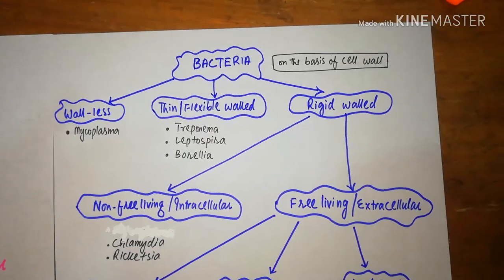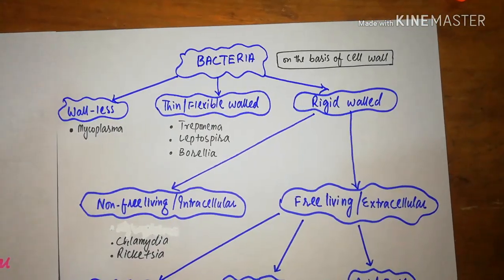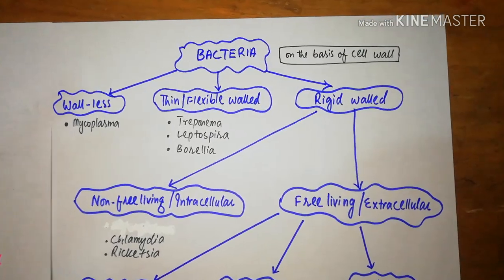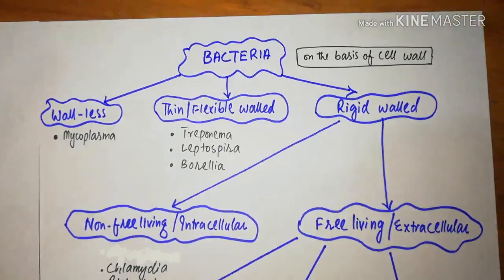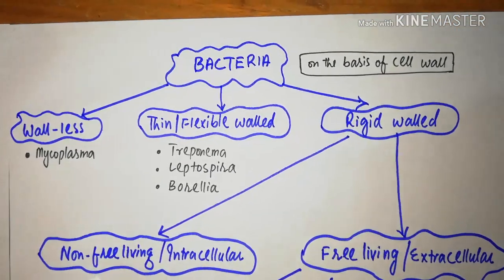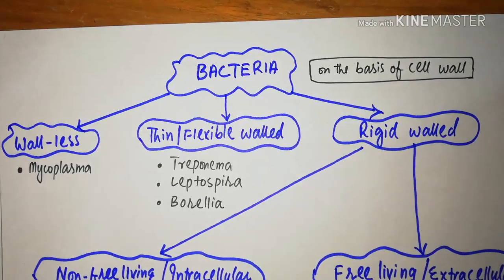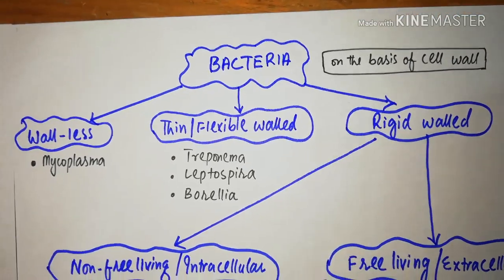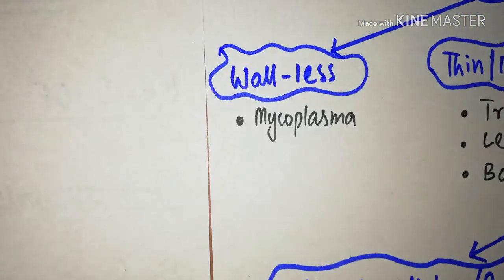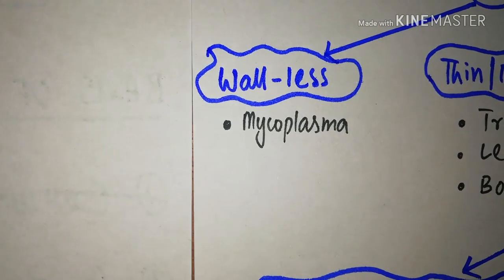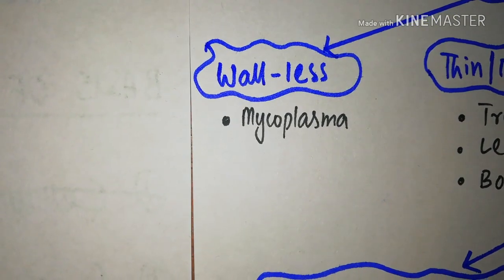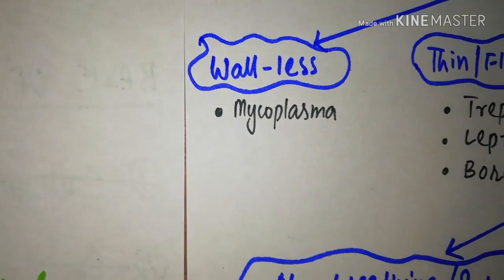My classification of bacteria will include all these four bases. First of all, on the basis of cell wall, bacteria can be of three types. Wallless bacteria includes the mycoplasma species and also the ureaplasma species.